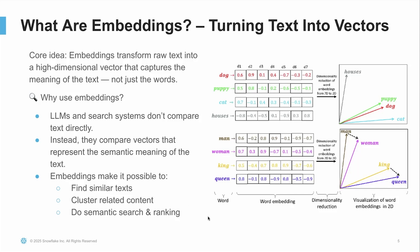As you can see in the visual to the right, we have our word which is converted into a high-dimensional vector, also known as a word embedding, and then it is reduced in dimensionality so we can understand how king, queen, man, and woman are closer together in context rather than, for example, man and queen. Same thing with puppy and dog — these two words are closer together in context than houses and cat.